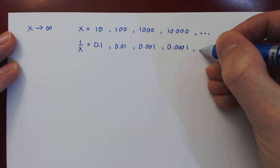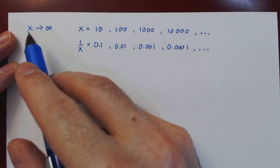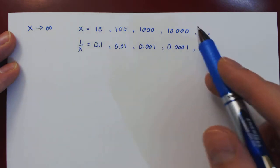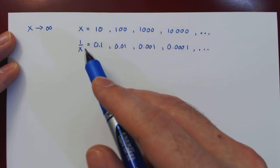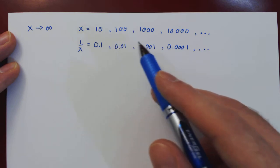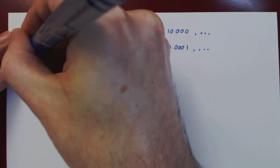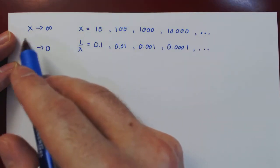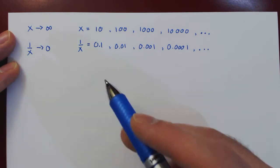So it should be clear that as x approaches infinity, as x is getting larger and larger, the reciprocal 1 over x is getting closer and closer to 0. It's getting smaller and smaller. So as x goes to infinity, 1 over x approaches 0.